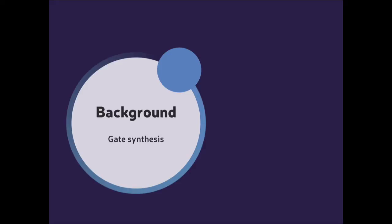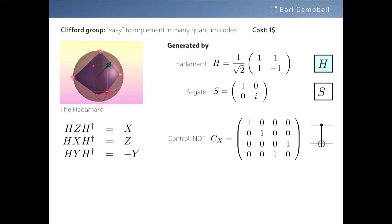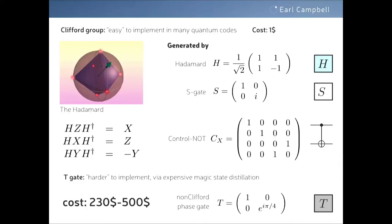The Clifford group is generated by Hadamard, S-gate, and controlled-NOT. The important thing is that it conjugates Pauli operators to Pauli operators — but it's not a universal gate set; in fact, we can efficiently simulate it. So we add the T gate. The Clifford group plus the T gate is the universal gate set. The T gate is just a phase gate; if you square T you get the S gate, so you can think of it as a square root of that gate.